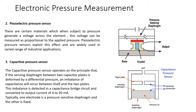The capacitive pressure sensor operates on the principle that when the sensing diaphragm between two capacitive plates is deformed by differential pressure, an imbalance of capacitance occurs between itself and the plates. As shown in the figure, there is a rigid plate and a sensing diaphragm with pressure applied at the port. This imbalance is detected by a capacitance circuit and converted to an output current, typically 4 to 20 milliamps.